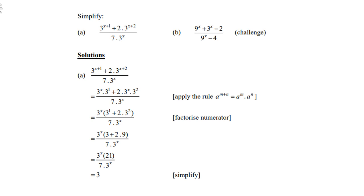We start by taking 3 to the power x plus 1 and reverse the first law. That means we split it and become 3 to the power x times 3 to the power 1. The same with the other one, 3 to the power x plus 2, we also reverse the first law and we split it as 3 to the power x times 3 to the power 2.